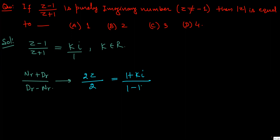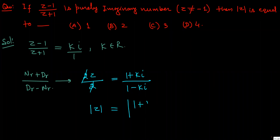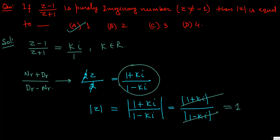So mod z equals mod of (1 + k·iota) upon mod of (1 - k·iota). Since (1 + ki) and (1 - ki) are complex conjugates of each other, their moduli are equal, so they cancel. Therefore mod z equals 1, and A is the correct option. You can also solve this by cross multiplication — the same result follows.